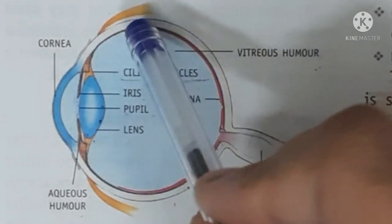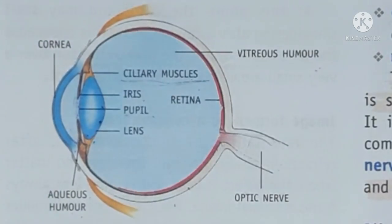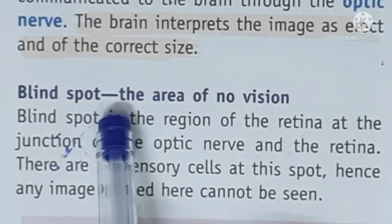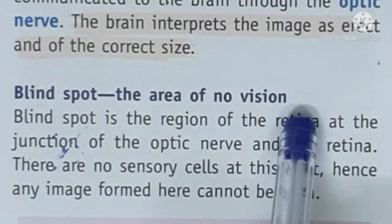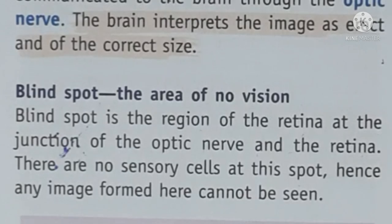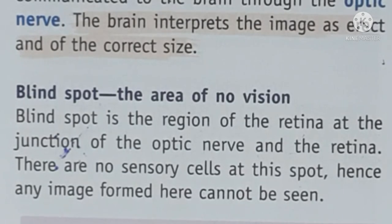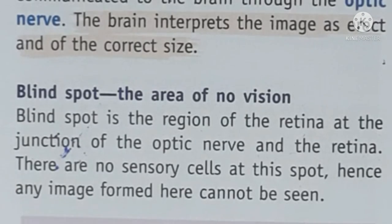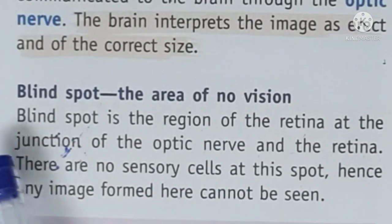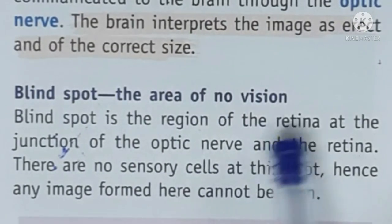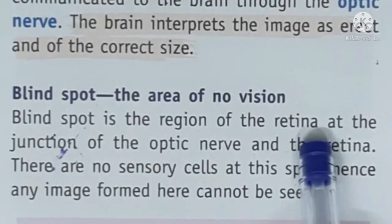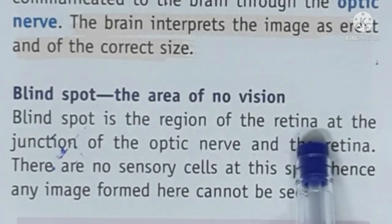Now, aapke is retina pe ek blind spot hota hai. So agar hum blind spot ke baare mein baat karein toh blind spot ko kehte hain the area of no vision. Matlab ki us particular blind spot pe agar koi image form ho rahi hai kisi object ki, toh aapko woh object dikhai nahi dega. So yoh blind spot hota kaha hai? So blind spot jo hota hai woh region hota hai of the retina — matlab kaha blind spot present hota hai — aapke retina pe hota hai. Retina pe kahan?